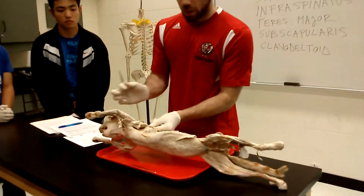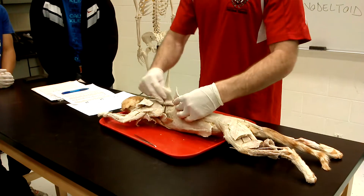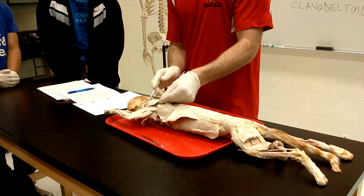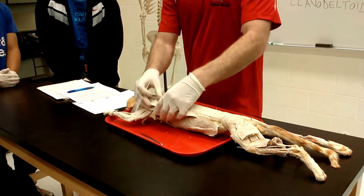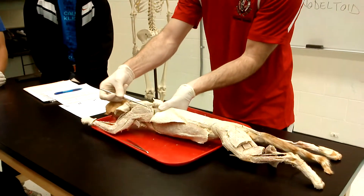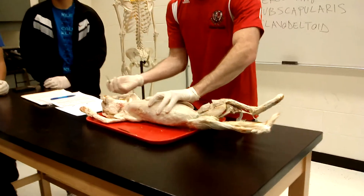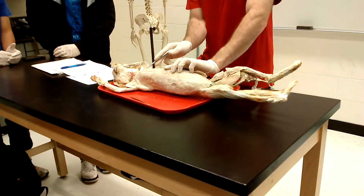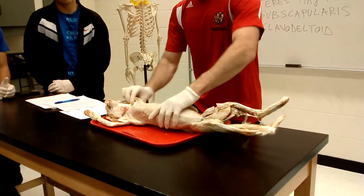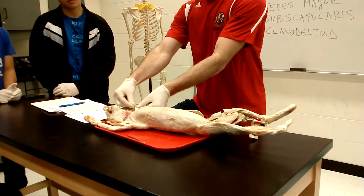On the side, coming from the ribs going to the scapula, we have serratus anterior. On the posterior side we have latissimus dorsi — the big back muscle, cut and reflected — and also cut and reflected is trapezius. The last one from last week is the rhomboids, deep in there going from the spine to the scapula.